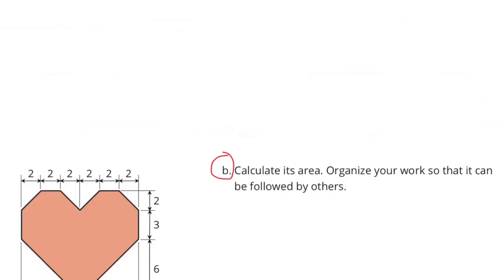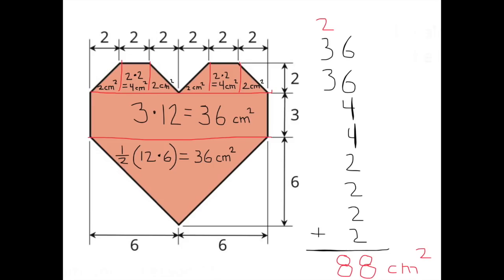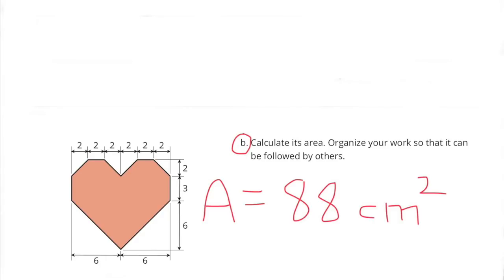B. Calculate its area. Organize your work so that it can be followed by others. I added up the area of all the shapes inside the polygon and I got 88 centimeters squared or 88 square centimeters. The combined area of the polygon is 88 centimeters squared.